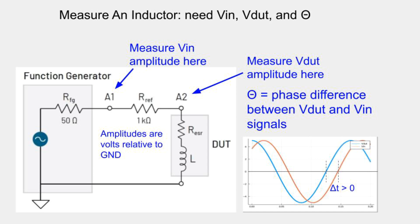You'll need a signal generator to produce the input sine wave and a resistor of known value. You'll also need an oscilloscope to make the measurements. I'll use an ADALM2000 to both generate the signal and make the measurements. The app note focuses on the series model of a non-ideal inductor or capacitor — a model in which the device under test, the DUT, is assumed to have a resistor in series with the device itself.